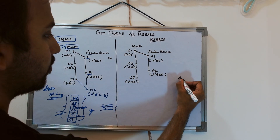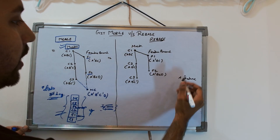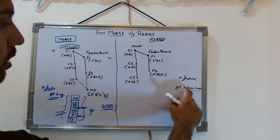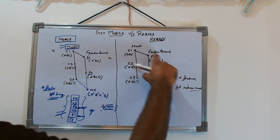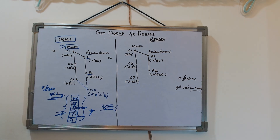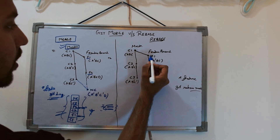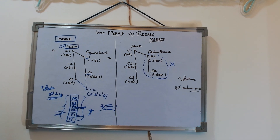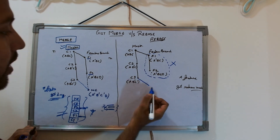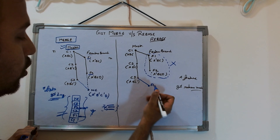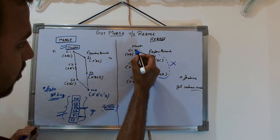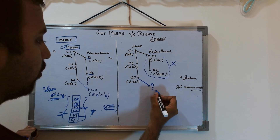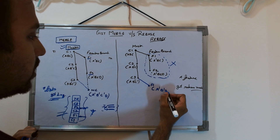Again, you want to integrate the master changes into the feature branch, but this time you are on feature branch and use the command `git rebase master`. What rebase does is it first removes your feature commits F1 and F2, then rewrites them on top of C1, C2, C3. It rewrites F1 first — keeping A-dash, B-dash, C-dash — resolving any conflicts along the way.